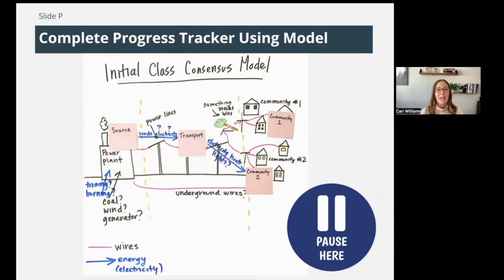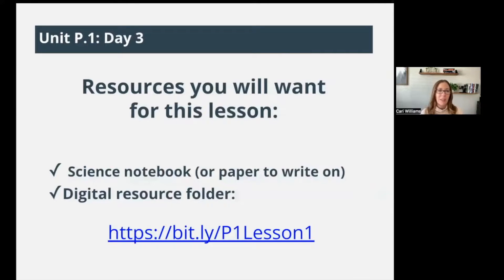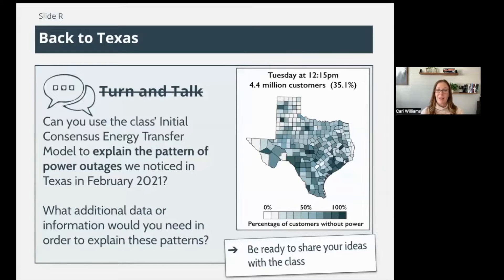Hopefully you're done with your progress tracker. This is actually the end of day two — it might be a little different in your classroom with the pacing. Normally we call this the end of day two, where we are done with the initial consensus model and the class consensus model in our progress tracker. We're now going to start day three. The resources you'll want will be again a science notebook and that same folder. I want you to think back to Texas — we're going to use that initial consensus model and your progress tracker to help explain the pattern of power outages we noticed in Texas in February of 2021.